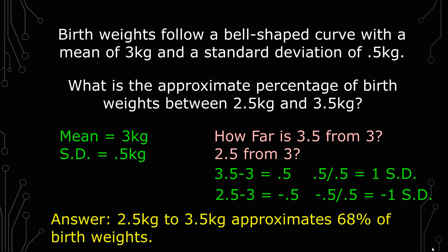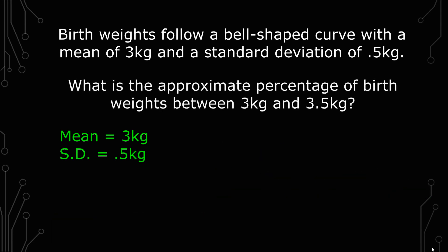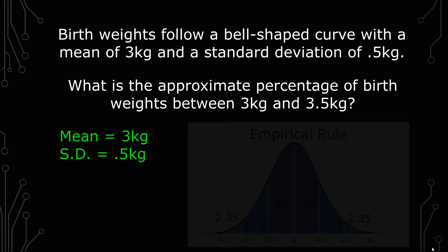The last thing I wanted to go over was a variation of this question because it does come up. You may be asked the same question, except they're going to kind of trick you in a way. They'll ask you, what is the approximate percentage of birth weights between 3 kilograms and 3.5 kilograms? So they'll purposely put the mean in there. And so for you, it's about understanding how this applies to the empirical rule.